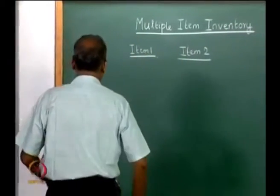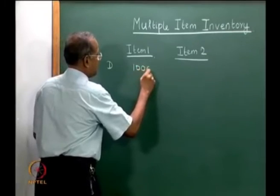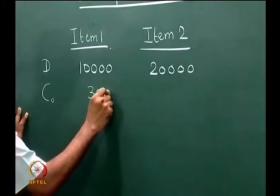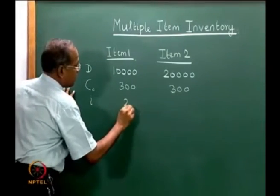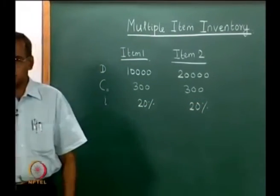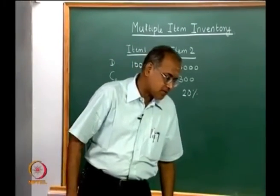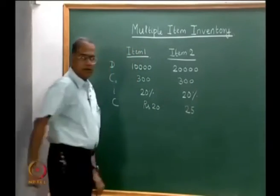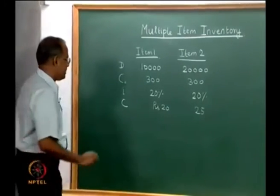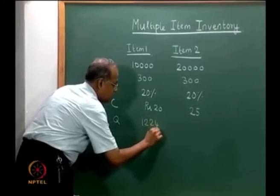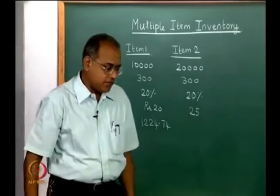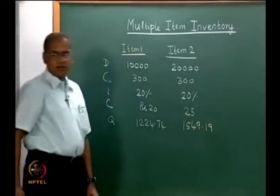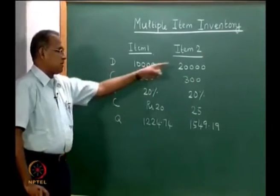Let us consider two items whose demands D are 10,000 and 20,000 per year. The order cost C-naught is the same 300 per order. The inventory holding cost is 20 percent of the unit cost for both items, and the unit prices are 20 and 25. We have already computed the economic order quantity for both items. The EOQ comes to 1224.74 for the first item and 1549.19 for the second item. The number of orders are also different for each of them.